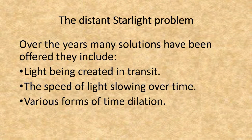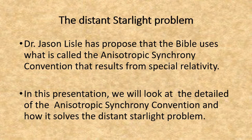Over the years, many solutions have been offered, including light being created in transit, the speed of light slowing over time, and various forms of time dilation. Dr. Jason Law has proposed that the Bible uses what is called the Anisotropic Synchrony Convention, which results from special relativity. In this presentation, we will look at the details of the Anisotropic Synchrony Convention and how it solves the distant starlight problem.